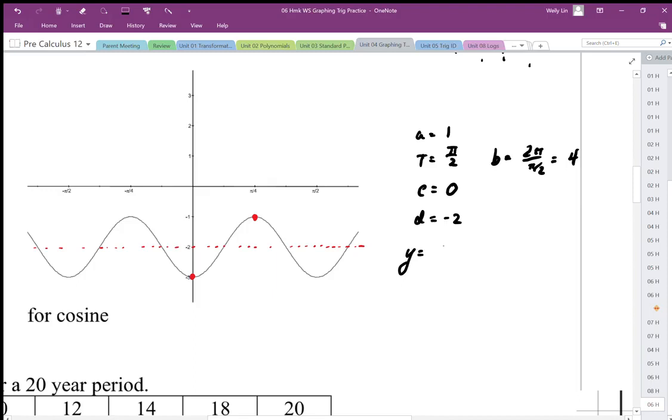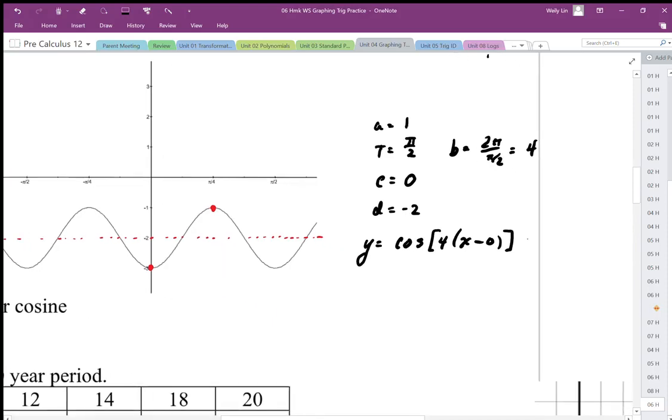Y is equal to negative one times cosine four times x minus zero. We don't need to put the minus zero in there, and then minus two as my vertical shift. So that's one way to do it.